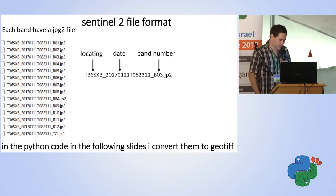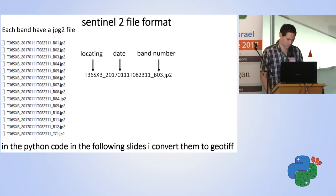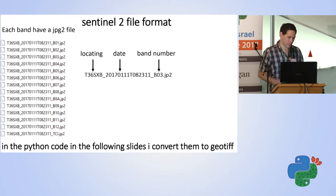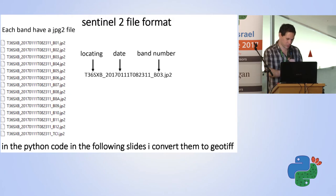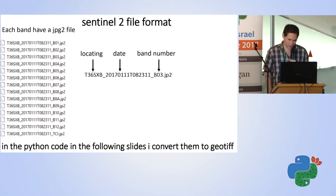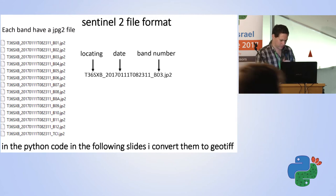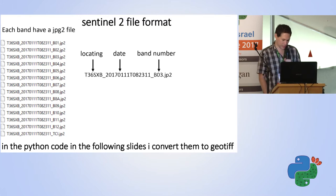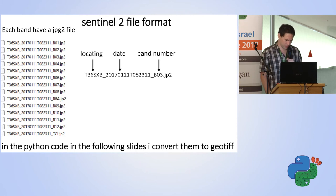When you download Sentinel-2 data, you get a series of JPEG 2000 files. Each file comes in a format that encodes the location, the date of the image, and the band number. If you combine bands 2, 3, and 4 into one image, you get an RGB image like a camera sees. You can also convert the data to GeoTIFF format; Landsat data already comes in GeoTIFF format.